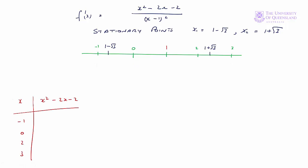When x equals minus 1, the numerator of our first derivative, x squared minus 2x minus 2, will equal 1 — so that's positive. When x equals 0, the numerator will equal minus 2 — that's negative. When x equals 2, the numerator will equal minus 4 — so negative. And finally, when x equals 3, the numerator x squared minus 2x minus 2 will equal plus 1 — so that's a plus.